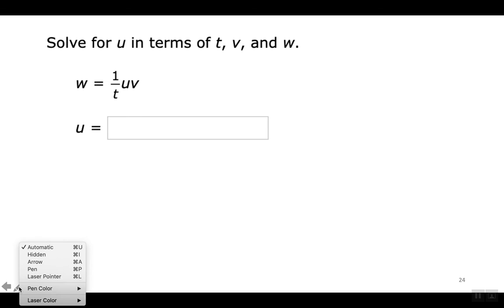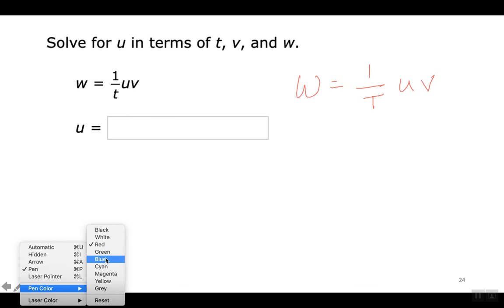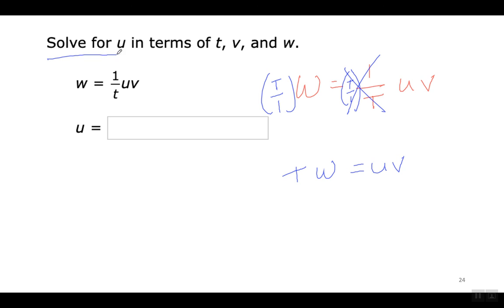Here is the same type of situation. First get rid of the fraction by multiplying both sides by its reciprocal — this cancels out and the fraction simplifies to T. Now divide both sides by V to solve for U. U equals TW divided by V.